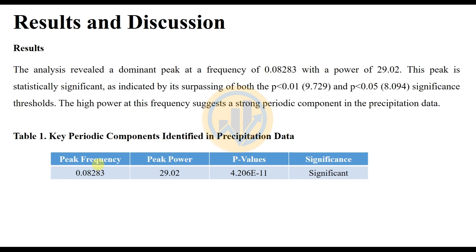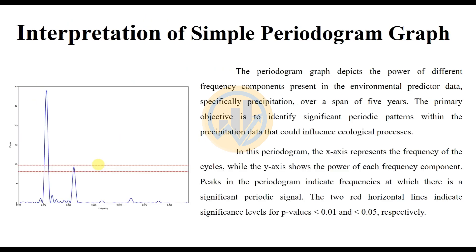The result and discussion part of the simple periodogram: the analysis revealed a dominant peak at a frequency of 0.08283 with a power of 29.20. The first peak value was 29.2 and the second peak value was 0.08283.